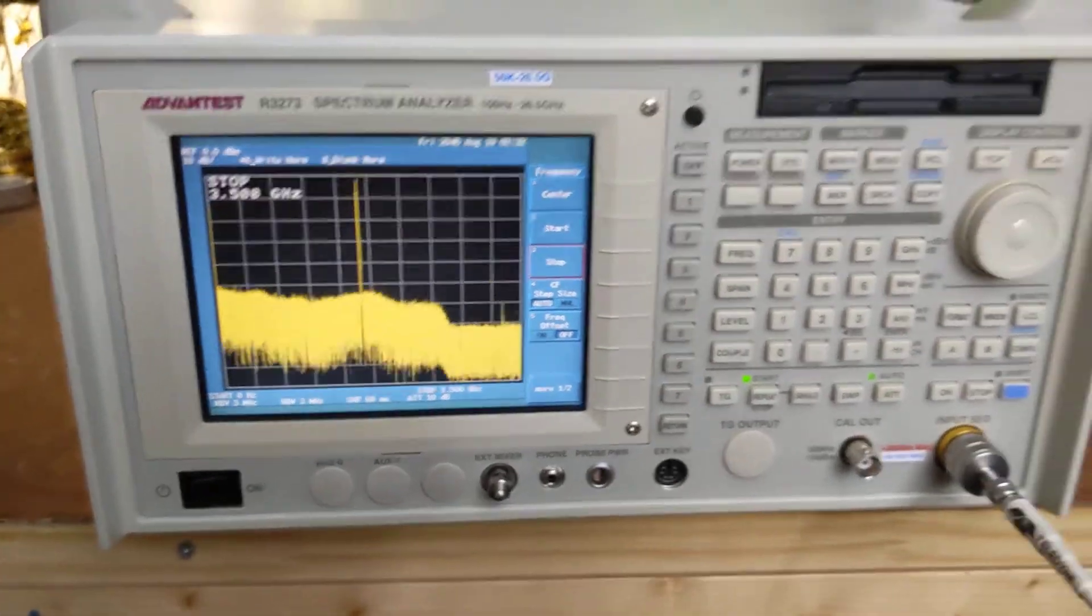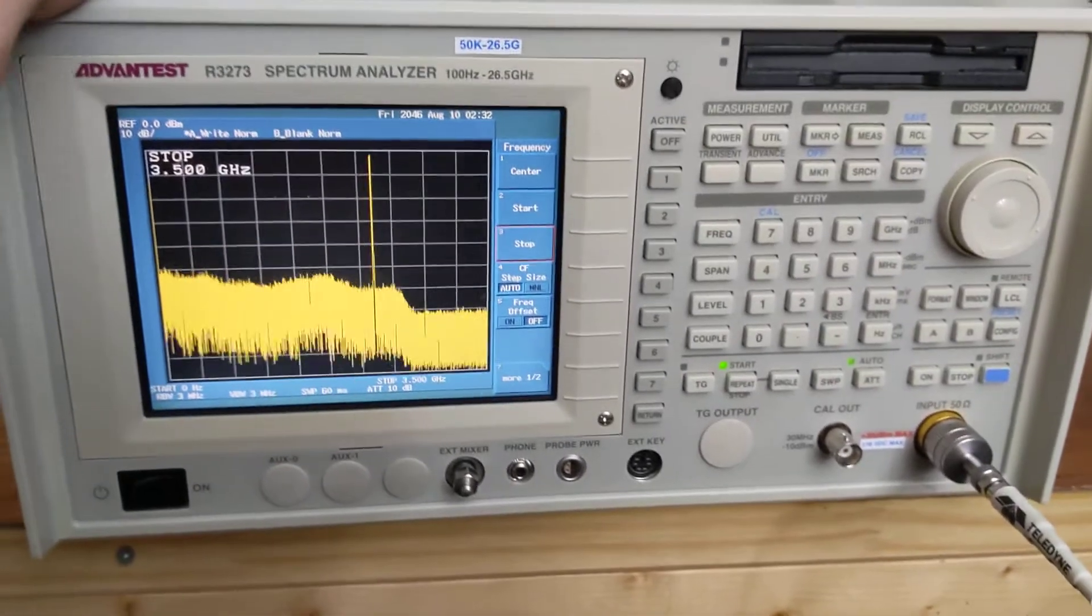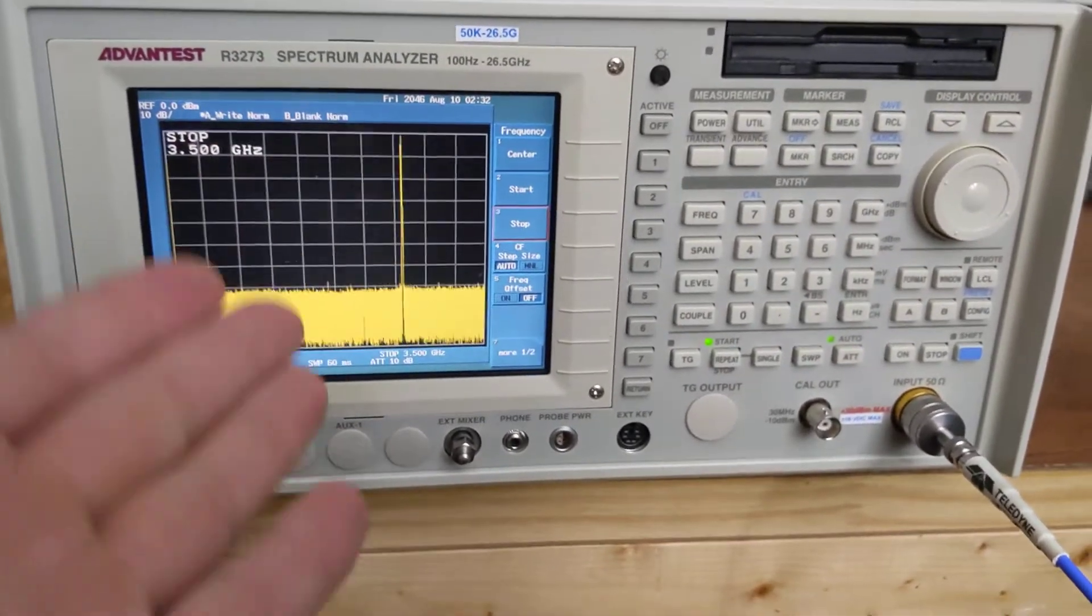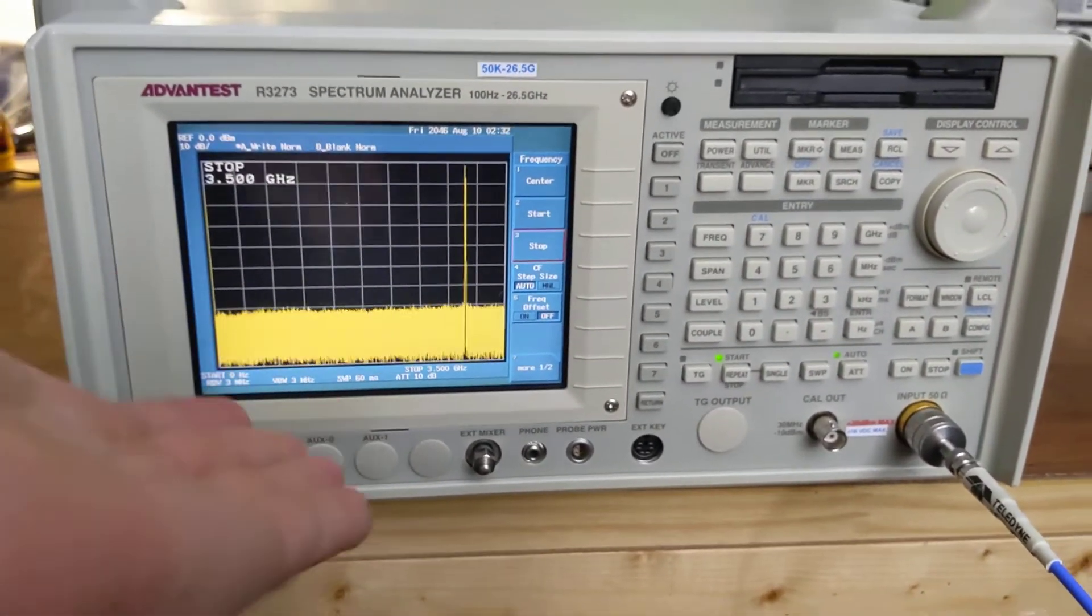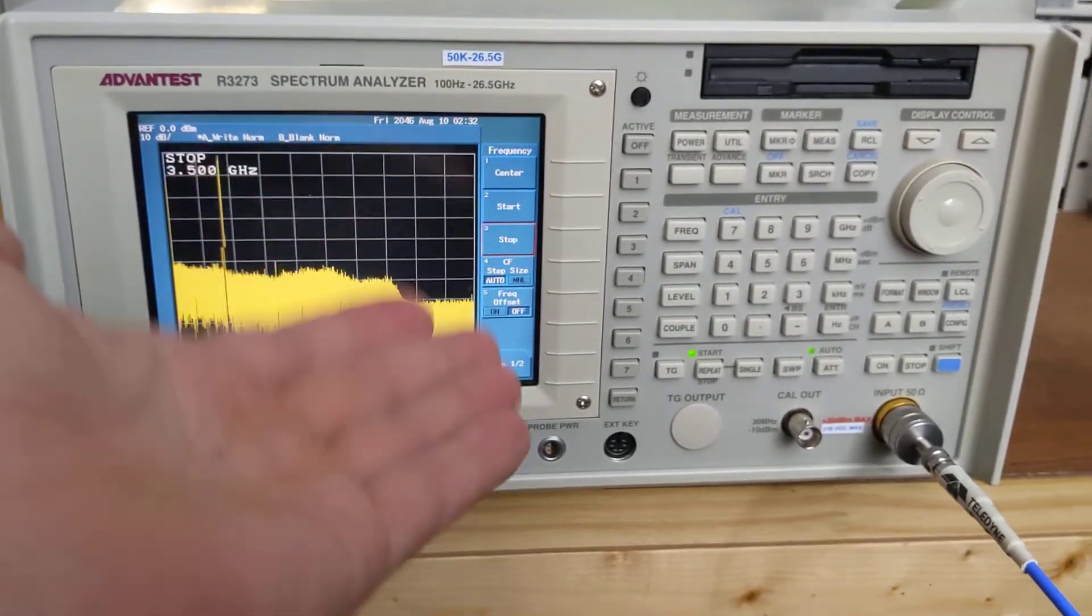This is an issue that pops up all the time in signal generators. People wonder why. Well, here it displays very obviously what's happening, where the low band has very obviously worse performance.